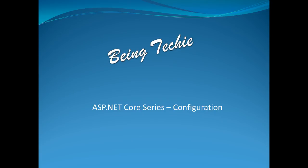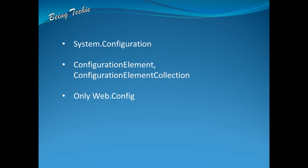Before looking at the new configuration system, let's see how configuration worked in past versions of ASP.NET. We used to have a System.Configuration assembly for all configuration element purposes. For any custom element, we used to create a ConfigurationElement-derived class, and if that element was repeated multiple times, we used to have a ConfigurationElementCollection. This was quite a hassle — for every custom element there was a custom class. Also, only the web.config file was used; it didn't support any other form of files.